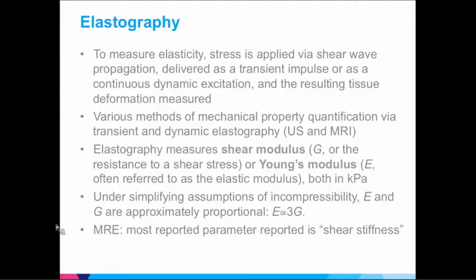With elastography you really have to apply stress on the organ of interest, in this case the liver. You can use shear wave propagation physically either as a transient impulse — that would be transient elastography — or you can do continuous dynamic excitation with ARFI ultrasound methods or with MRI. The resulting tissue deformation gives you the mechanical property of the tissue. There's sometimes confusion when reading articles: Young's modulus is applied typically to ultrasound elastography — Fibroscan is called E or elastic modulus, measured in kilopascals — while shear modulus G is mostly used for MR elastography, and there's typically a factor of three between the two.